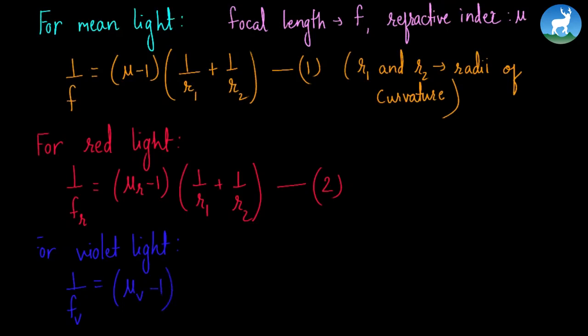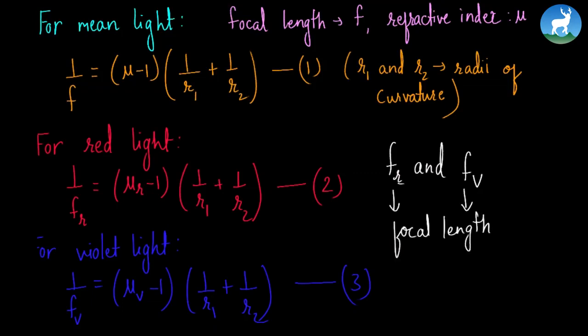Here fr and fv are the focal lengths for red and violet light. Now we subtract equation 2 and 3.